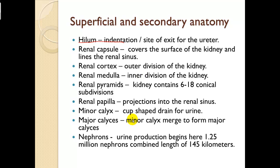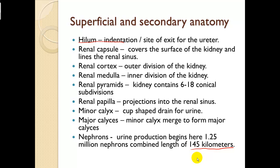Nephrons are where urine production begins. There are about 1.25 million nephrons. If put end-to-end, their combined length would be about 145 kilometers. When talking microscopically, we have a tremendous amount of surface space.